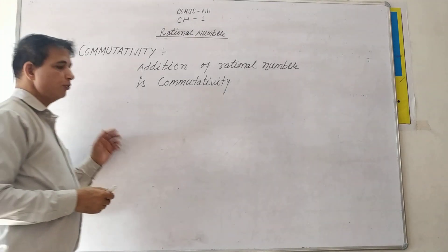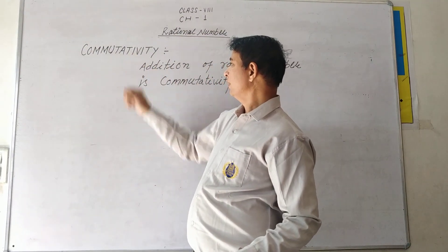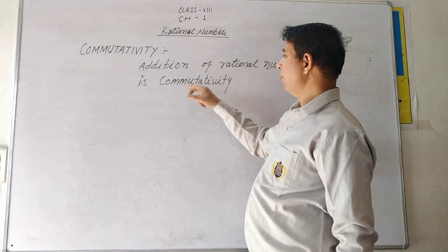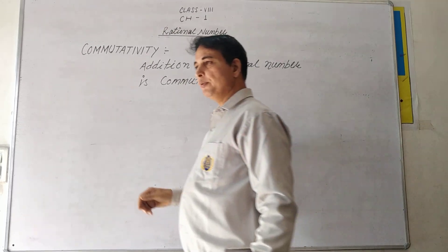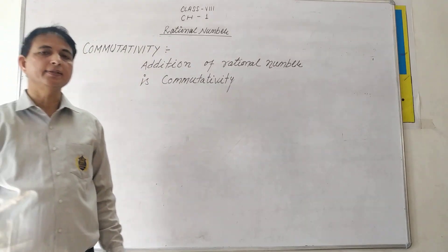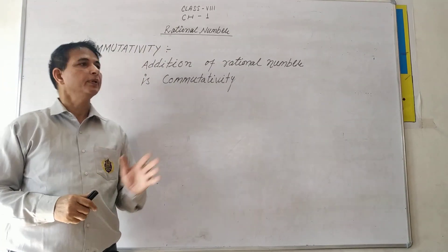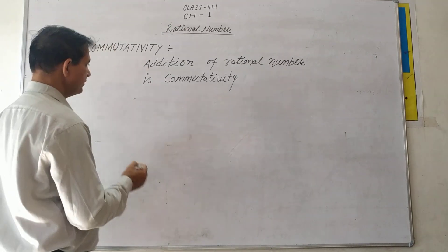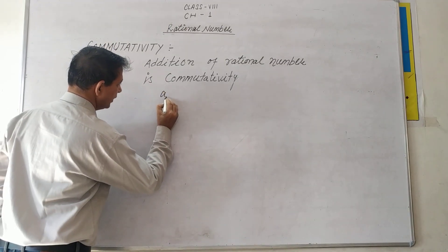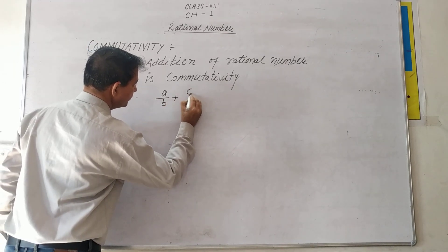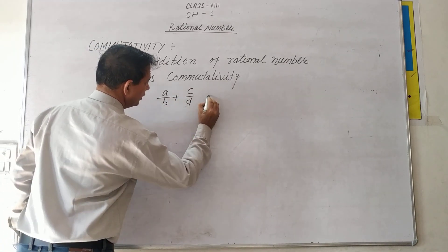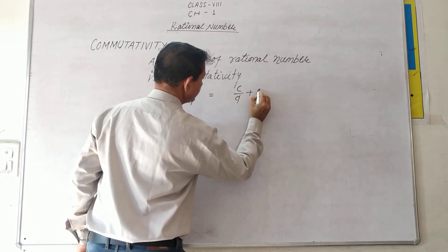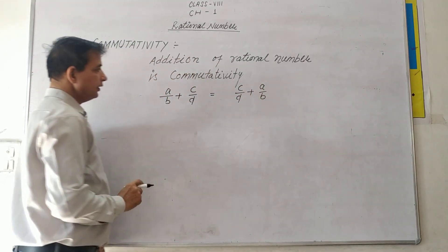The next property is the commutative property. Addition of rational numbers is commutative — if you change the order, the answer remains the same. For example, A upon B plus C upon D always equals C upon D plus A upon B.